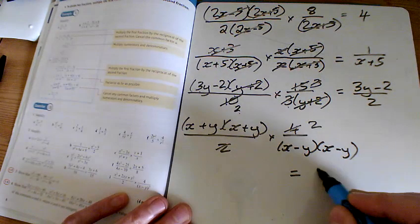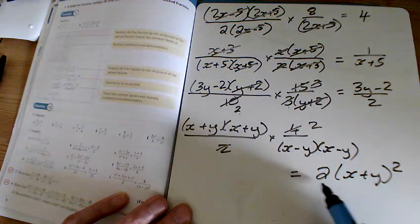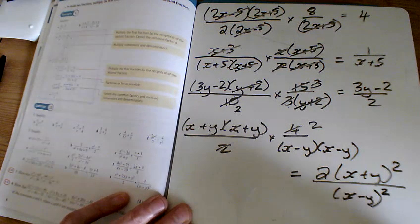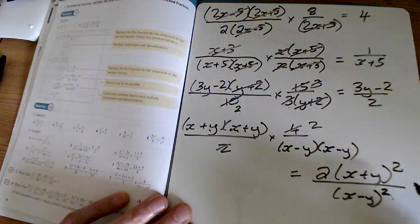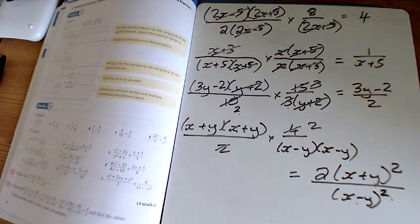There are 2 of them, so my answer here is 2 times x plus y all squared—I'm just going to put that as a squared—and x minus y all squared there. Don't consider cancelling these squares because of course these are different brackets, and so that's the end of i.